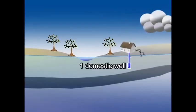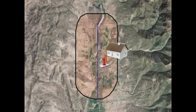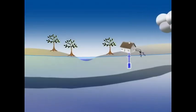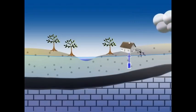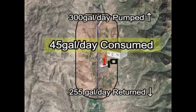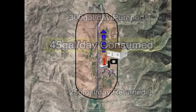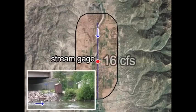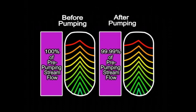If only one domestic well is pumped near the stream, impact is minimal. If the domestic well is for a typical household, about 300 gallons per day would be pumped. Rural homes with wells have on-site wastewater disposal systems that return water to the aquifer. The amount returned varies depending on the construction of the system and the character of the soil and geology. We assume 85% of the water returns, so for this scenario, 45 gallons of water are consumed from the aquifer each day. Before pumping, 16 cubic feet of water flowed past the stream gauge each second. With the addition of one home, changes in the system are too small to measure.